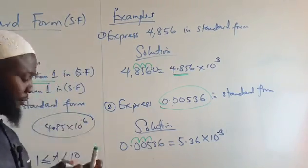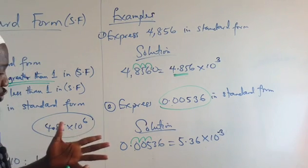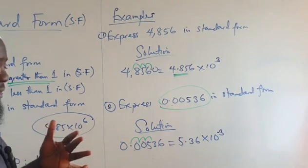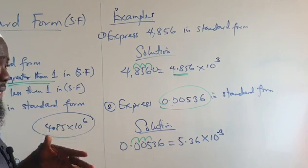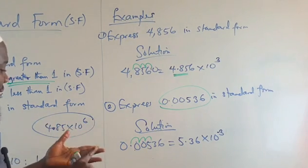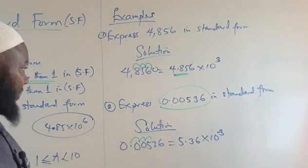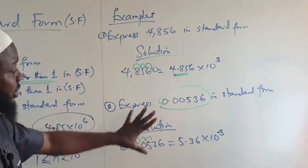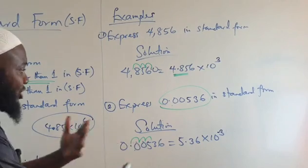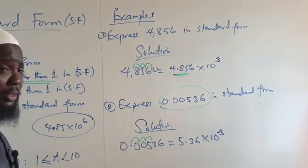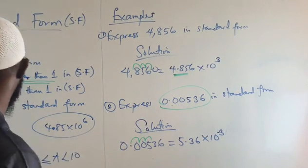Don't forget, this topic covers JSS2 (year 8 in the Nigerian curriculum), year 9 which is JSS3, and year 10 which is SSS1, SSS2, and SSS3. We are still going to look at operations involving standard form before we end this class.